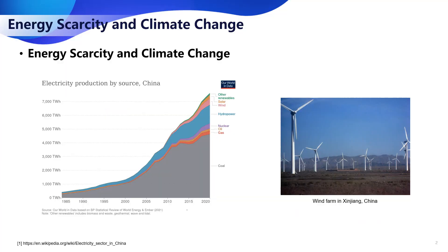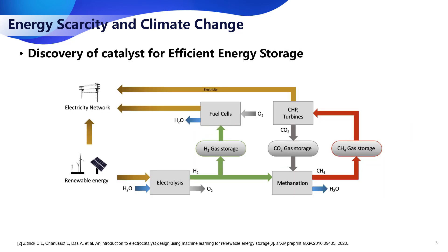The Open Catalyst project aims at tackling the energy scarcity and climate change issue. For instance, in China, a majority of electricity production is fueled by burning coal or fossil fuels. These processes negatively affect the climate, whereas wind or solar energy are much cleaner. The core interest of the Open Catalyst project is to help discover new catalysts that can efficiently produce clean and renewable energy, thus helping reduce carbon emissions and alleviating climate change.